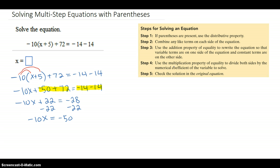Finally, step 4. We're going to use the multiplication property of equality to divide both sides by the numerical coefficient of the variable. So I'm going to divide both sides by negative 10. If the negative 10 is canceled, we get an x. We get x equals 5.